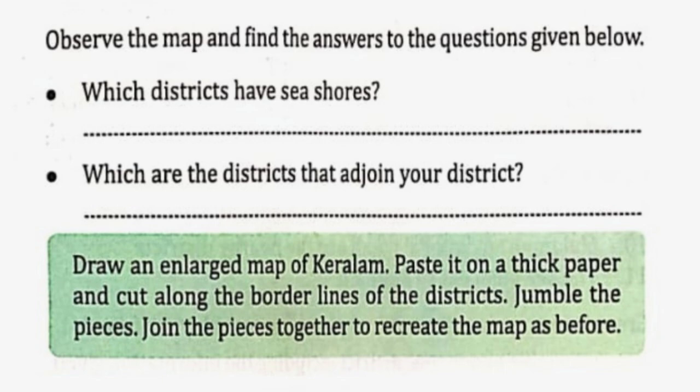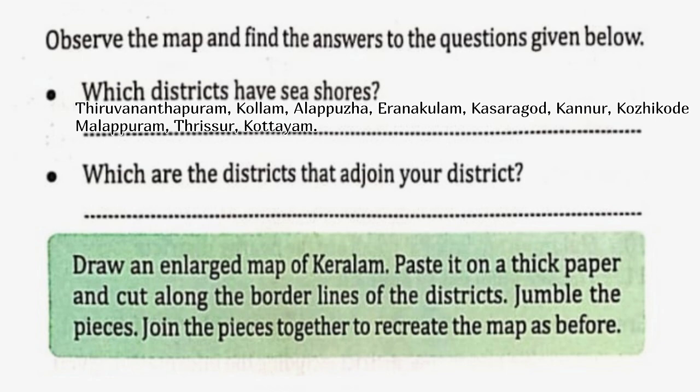Copy and draw the map of Kerala and color your district. Observe the map and find the answers to the questions given below. Which districts have seashores? Thiruvananthapuram, Kollam, Alappuzha, Ernakulam, Kasaragod, Kannur, Kozhikode. Cut along the border lines of the districts, jumble the pieces, then join them together to recreate the map as before. Do as your teacher instructs you.